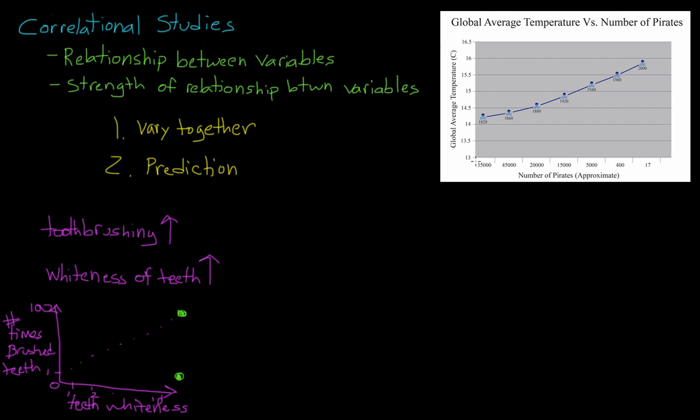You can clearly see there's a correlation between global average temperature and a decrease in the number of pirates on the high seas. Now, are these two factors actually related to each other? No, not in the slightest. This is just some kind of blip in the system.